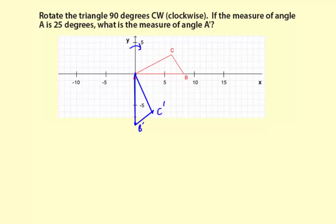So the question is, if the measure of angle A is 25 degrees, right there, what is this angle measure, angle A prime? Well, it's also going to be 25 degrees.